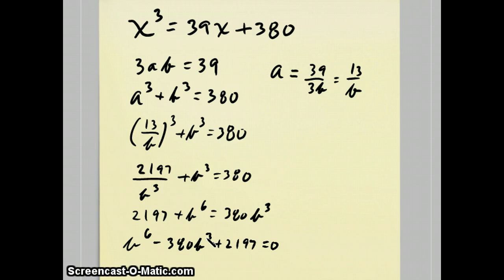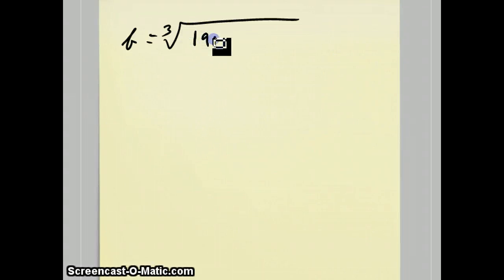We solve this equation as the final example. And the answer became b equals the cube root of 190, plus or minus the square root of 33,903.